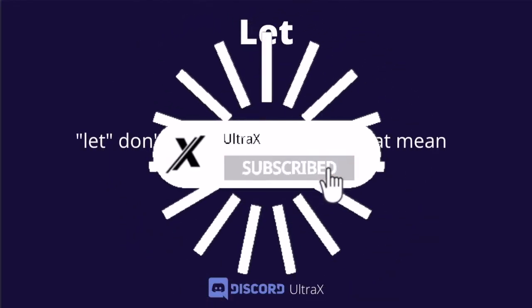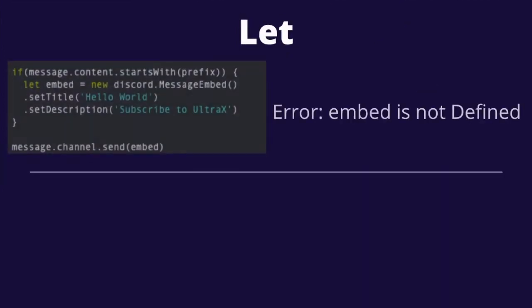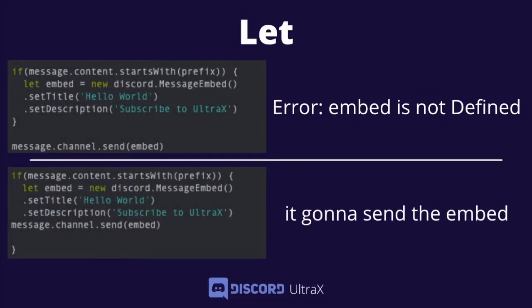Let does not have a global scope — it is block-scoped. That means if I do what I did with var, where I put message.channel.send(embed) outside the bracket when embed was defined inside the bracket, it will not work — it will say 'embed is not defined'. But if I put message.channel.send(embed) inside the same bracket as where embed is defined, it will send the embed with no errors.